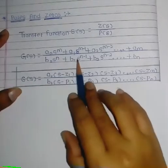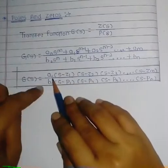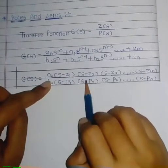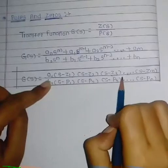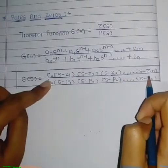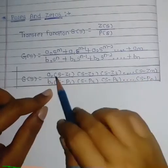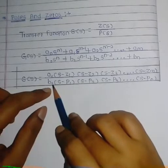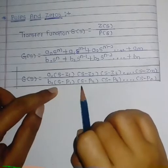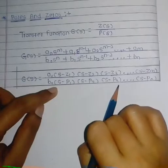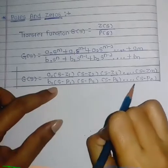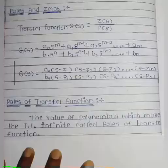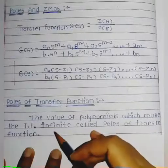G(S) can also be written in factored form: a0·(s − Z1)(s − Z2)(s − Z3)... up to (s − Zm) in the numerator, and b0·(s − P1)(s − P2)(s − P3)... up to (s − Pm) in the denominator.